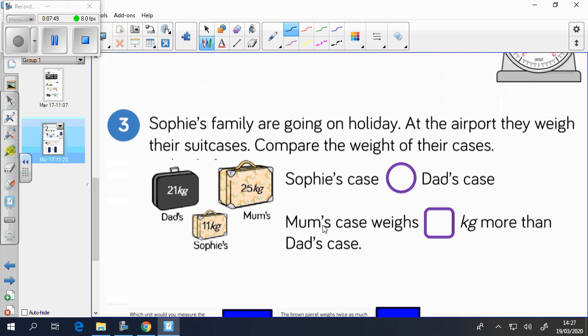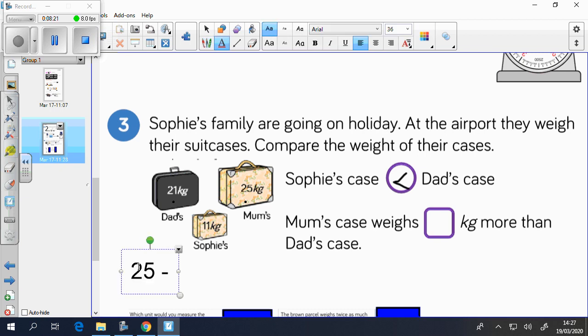Question 3. Sophie's family are going on holiday. At the airport, they weigh their suitcases. Compare the weight of their cases. Pause the video now to have a go. So Sophie's case is less than Dad's case. Just pop the symbol in there. Mum's case weighs something kg more than Dad's case. So you can see Dad's is 21 and Mum's is 25. So again, you're finding the difference. 25 take away 21, which leaves you with 4. So Mum's case weighs 4 kg more than Dad's case.